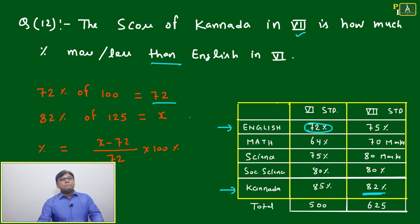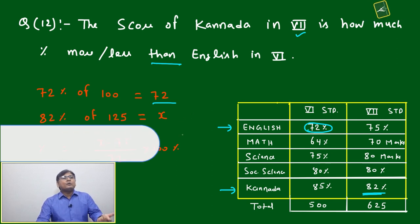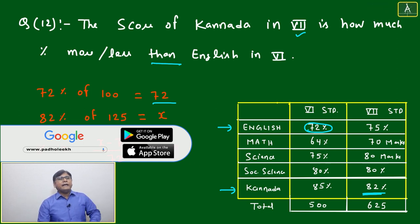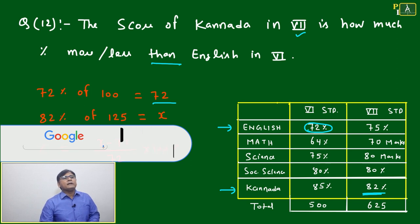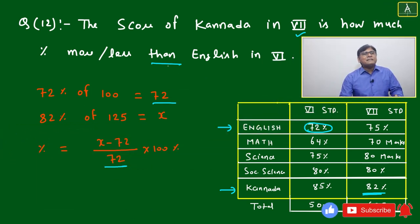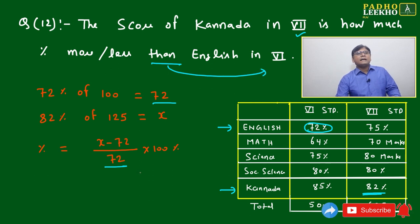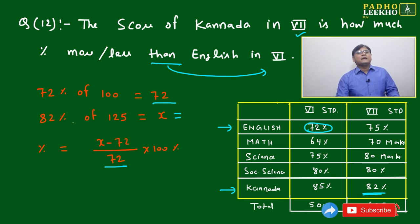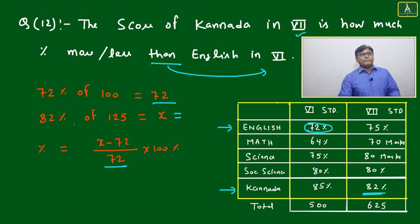We need to calculate 82 percent of 125, either directly or indirectly. Then the percentage increase will equal x minus 72, divided by 72, into 100 percent. So we need to find the value of x, which is 82 percent of 125.